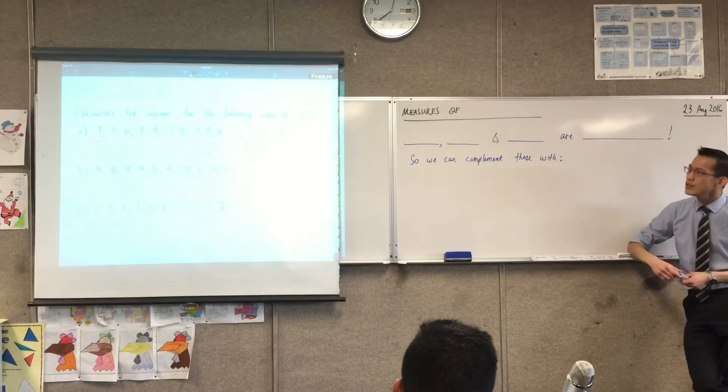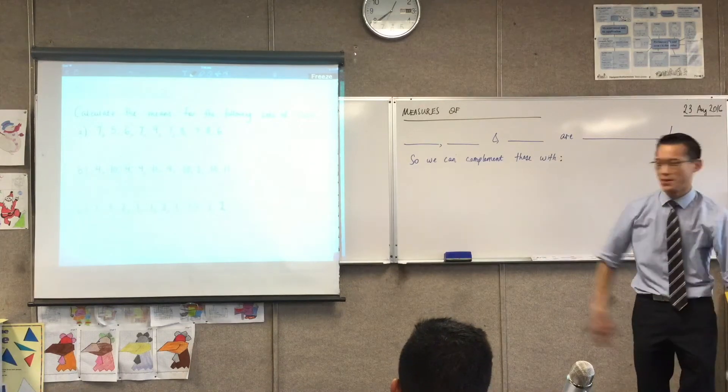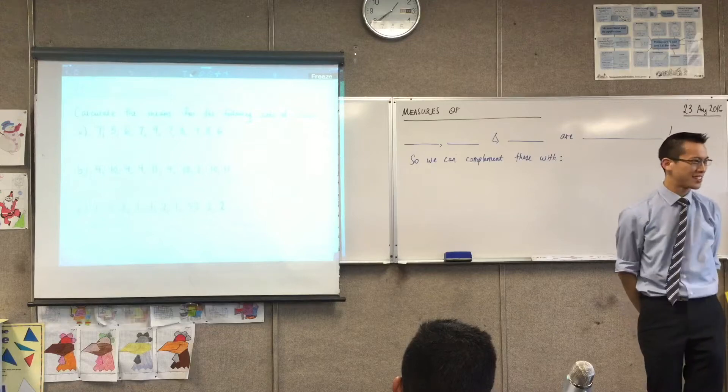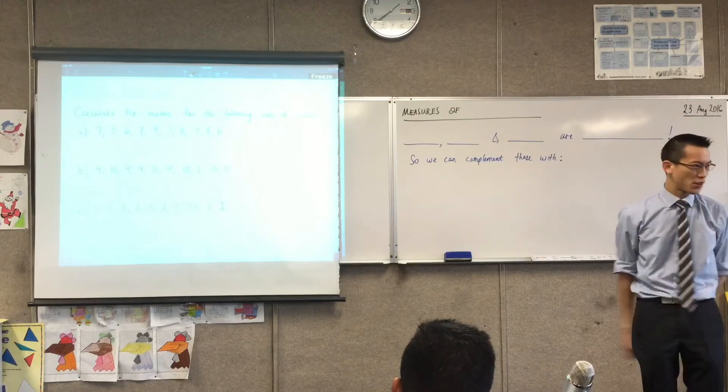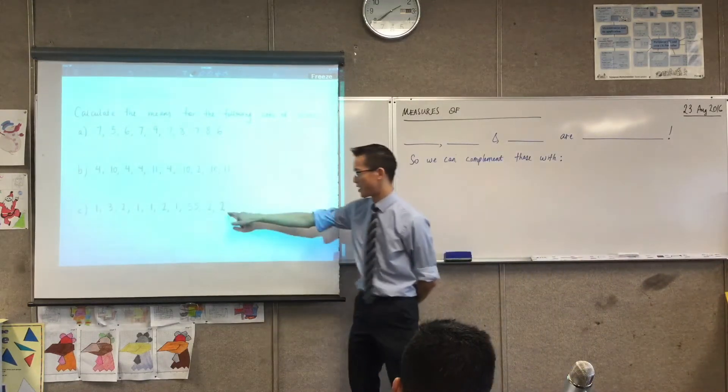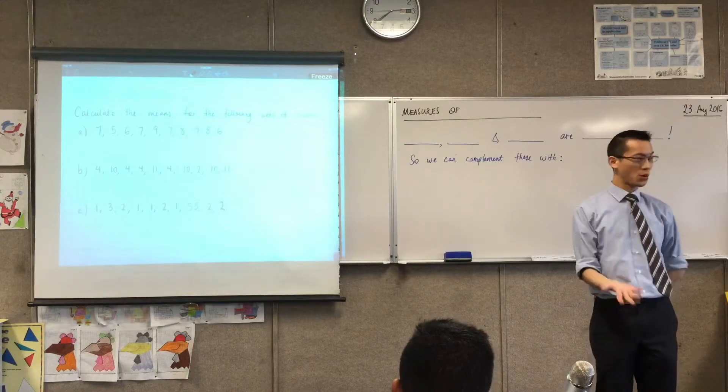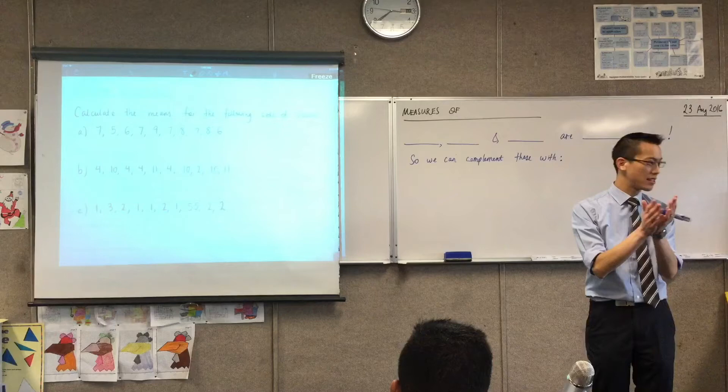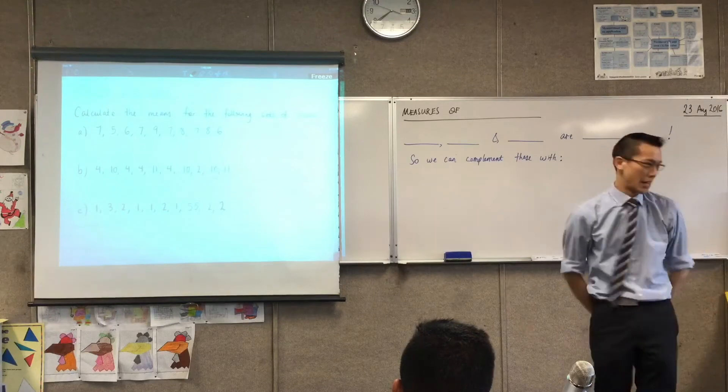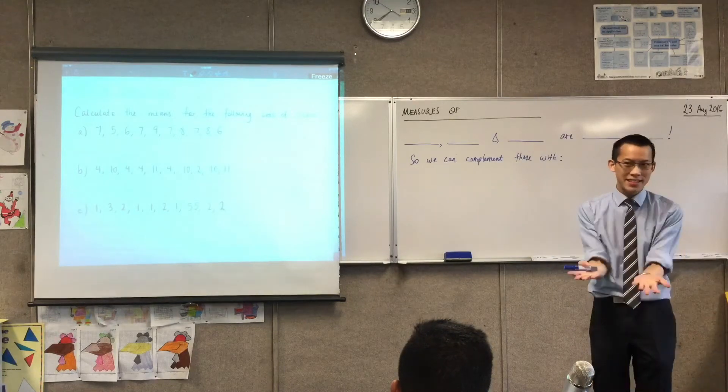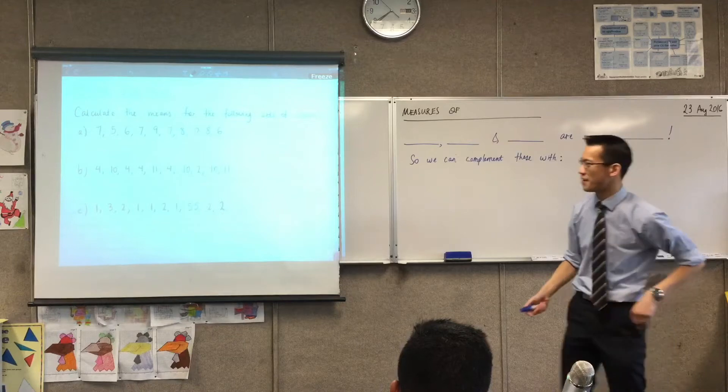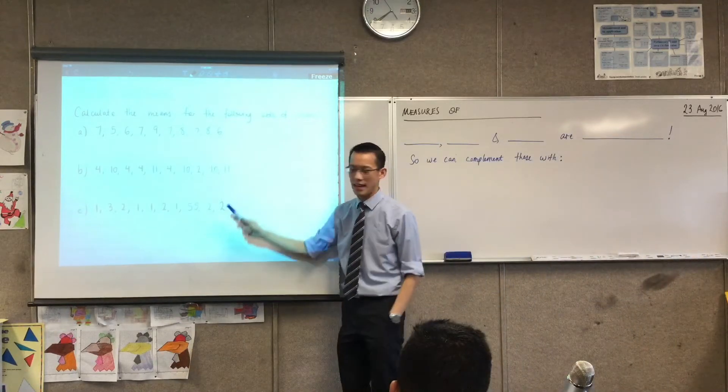I've given you three data sets, and as you can see, just by looking at the numbers, they're quite different data sets to each other, right? But you've gone ahead, you've calculated all their means, now that I've fixed this one, and because each of them has the same number of scores, and each of them has the same sum overall, they all add up to 70, you get the same mean every single time. 7, 7, and 7.